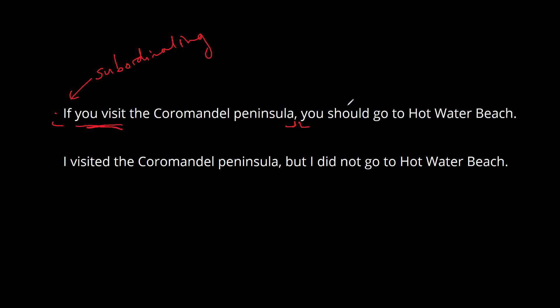The second clause is independent. You should go to Hot Water Beach, and you can hear that that can be a sentence by itself. So if you have a dependent clause, you always need to attach it to an independent clause, and you do that usually by means of a conjunction. We'll talk about one other way to do it as well in a moment.